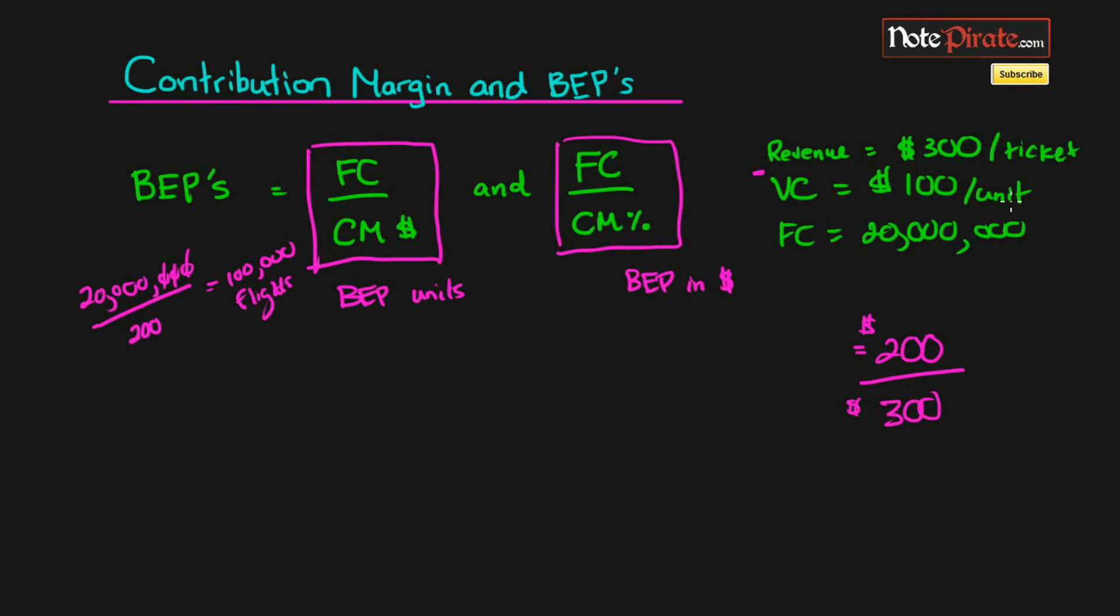Since the revenue is 100% of a sale, and the variable cost is a portion of the revenue that we make. So this is actually going to work out to be .667, or there's many more decimals, but that is the closest. I'm going to round it to that.